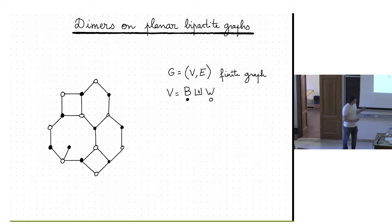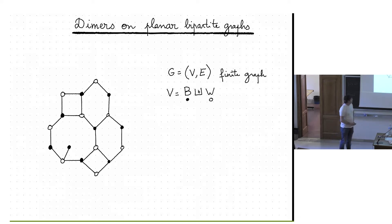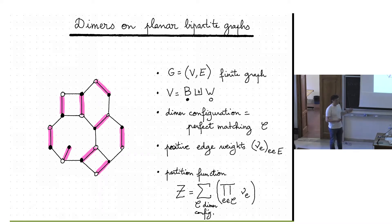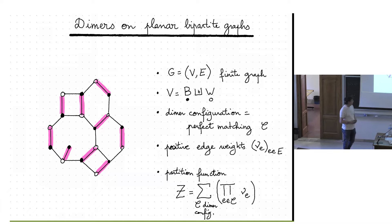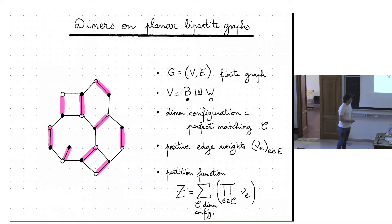I will start with some recap about diamond models — we saw already a lot of material in Kurt's talk yesterday. I start with a finite bipartite graph G, which has white and black vertices. White are only neighbors to black vertices and vice versa. I will look at dimer configurations on this graph — matchings of the graph: a subset of edges such that every vertex is incident with exactly one edge. I suppose I'm given some positive edge weights, and I can create a partition function, which is the sum over all dimer configurations of the weight of the configuration, which is just the product of the weights.